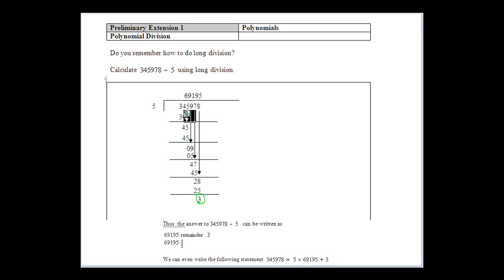So basically 5 will go into 345,978 69,195 times with a remainder of 3, so 3 left over. Or if we want to write it in terms of a fraction, we could write it as 3 fifths.